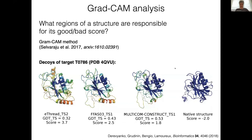We use the same idea for our model. We ask: what regions of the structure were responsible for its bad or good score? Depending on the quality of the decoy we feed the model, it will highlight different regions deemed detrimental to the score. Interestingly, the native structure, which the model never saw before, appears uniformly blue — meaning there doesn't seem to be any region in that input that could be improved in terms of score. This is a sign that we're detecting the right native structure.